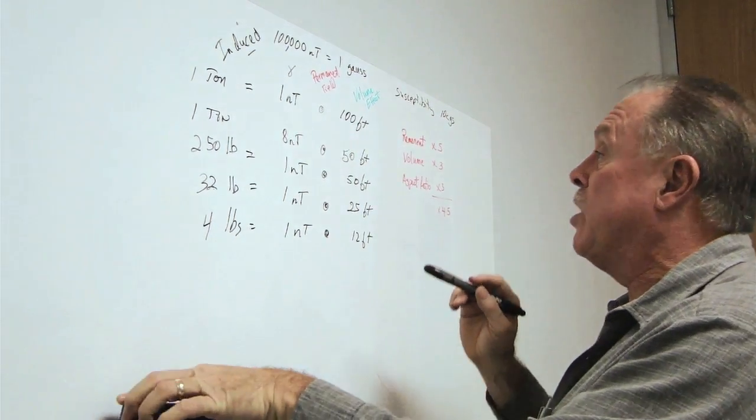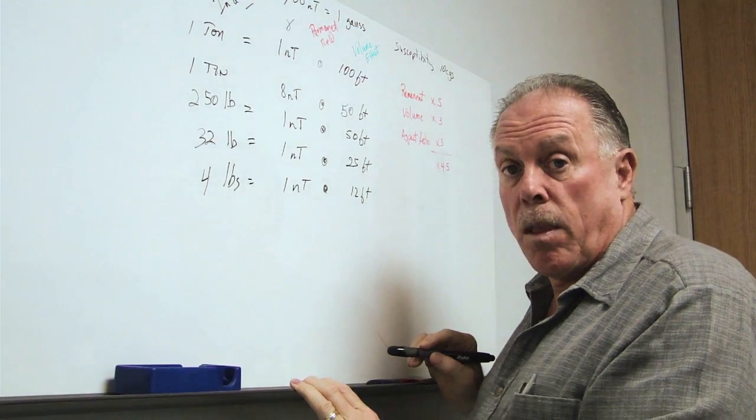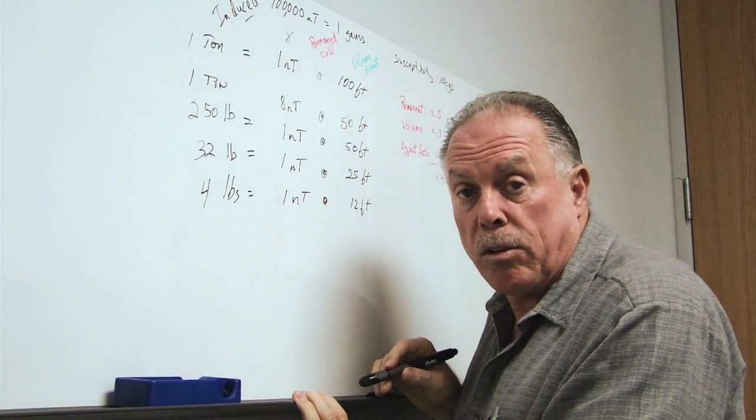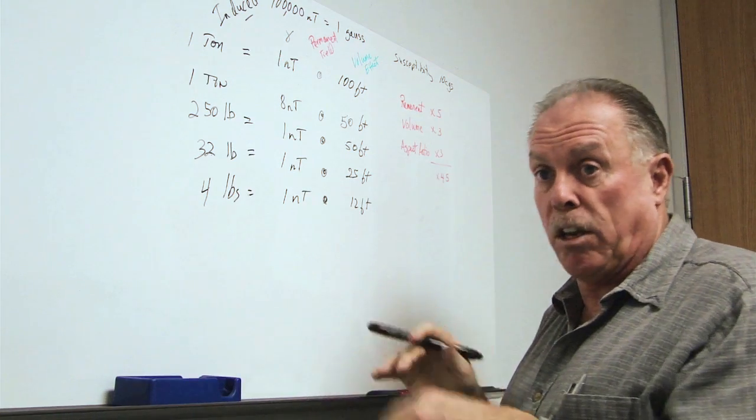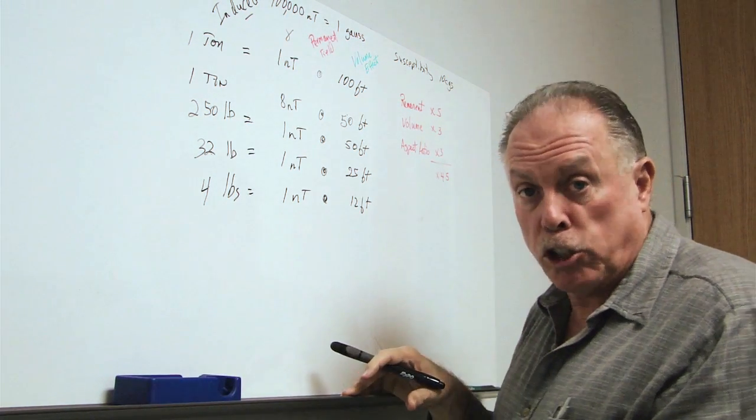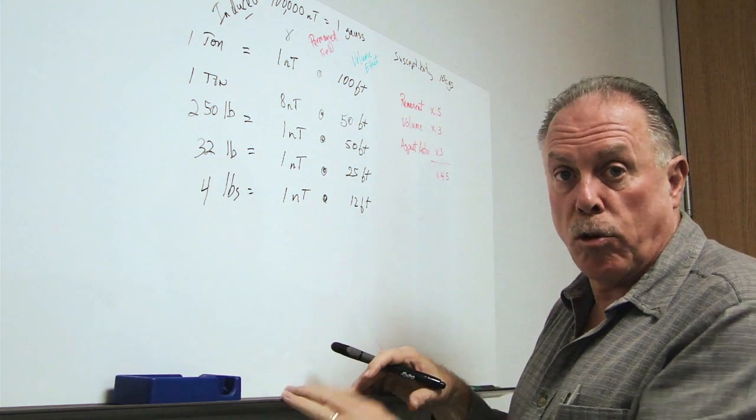So we saw that we could get as much as a five times increase in the remnant field. We also saw that we might be able to get up to a three times increase in the volume of the object if it's hollow, which is true of most unexploded ordnance, most ships, and other types of man-made artifacts, pipelines and so forth.